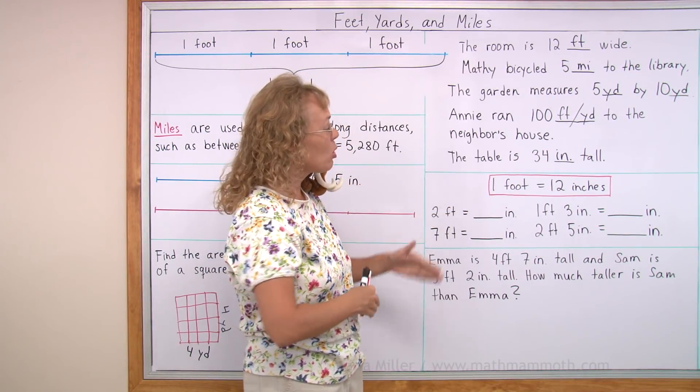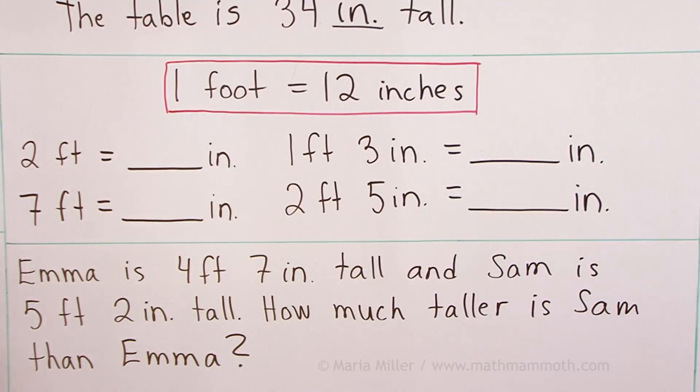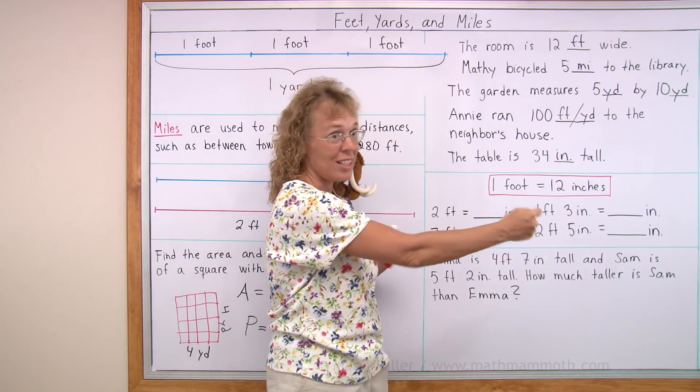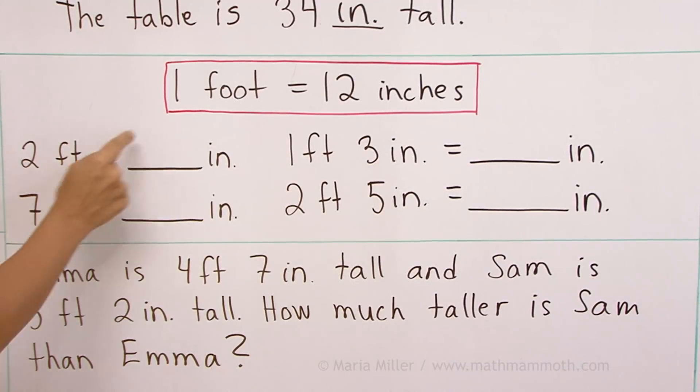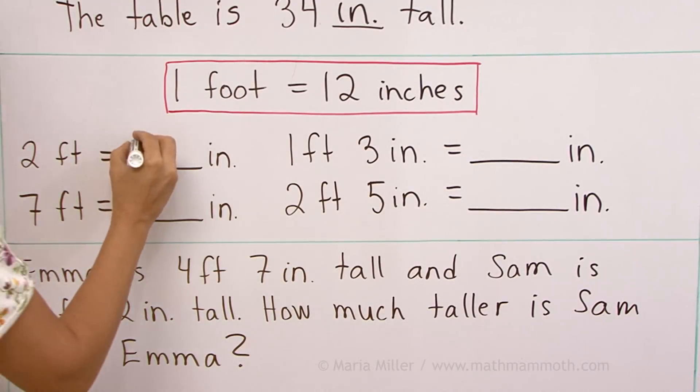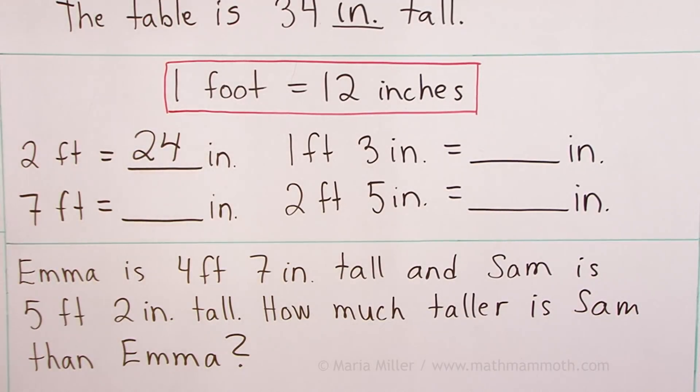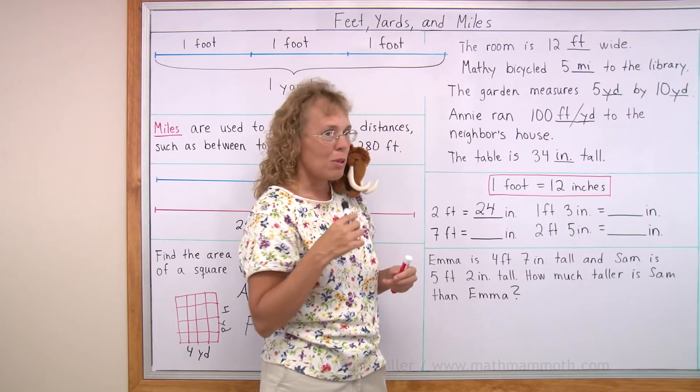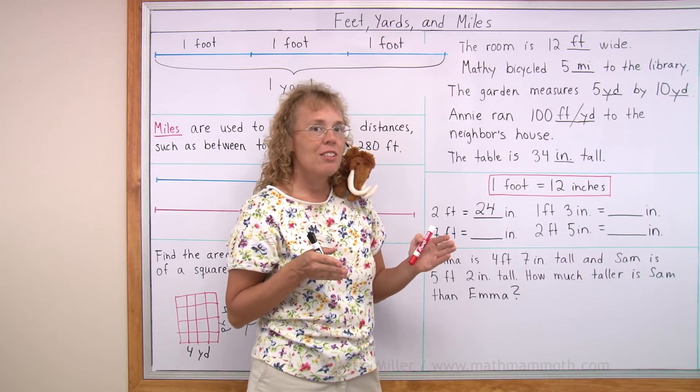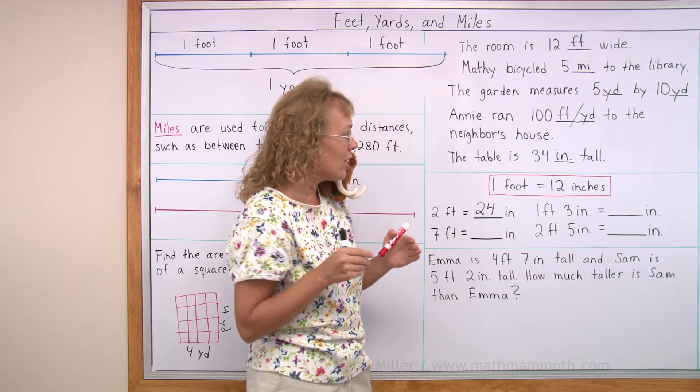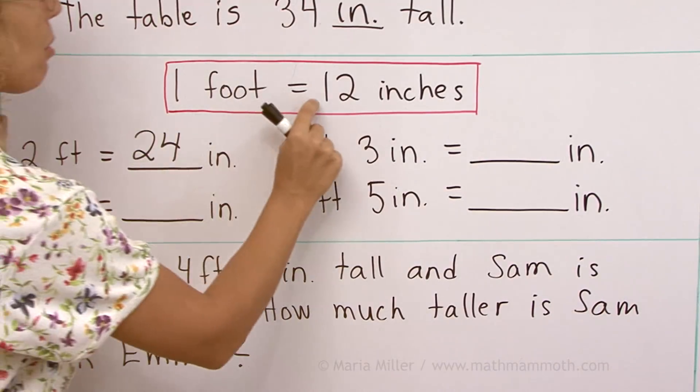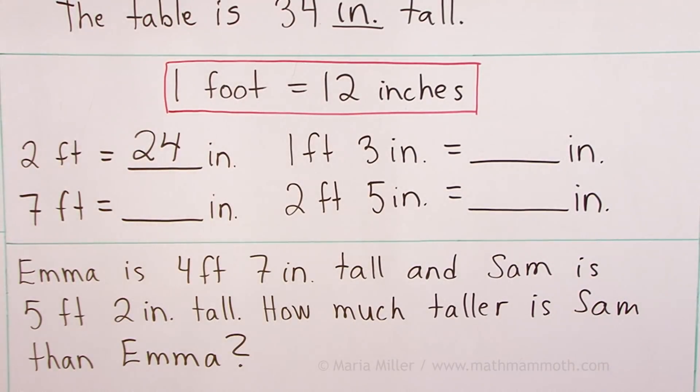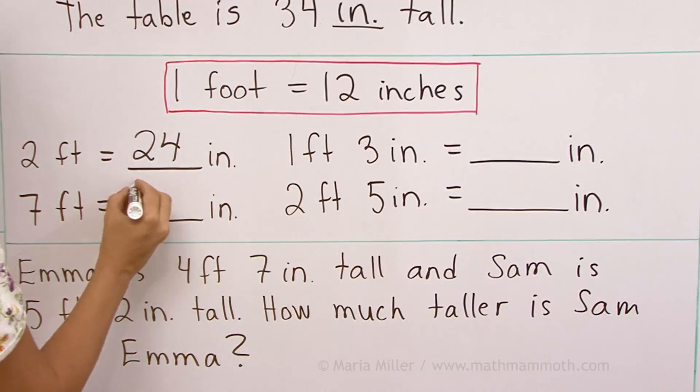Lastly, we are going to do some conversion problems. One foot is 12 inches, like I told you. You saw it on the ruler, right? So how about two feet? How many inches would it be? If one foot is 12 inches, two feet is 24 inches. How about seven feet? One foot is 12 inches. Seven feet is seven times that much. You multiply seven times 12. Your multiplication tables? 84 inches.